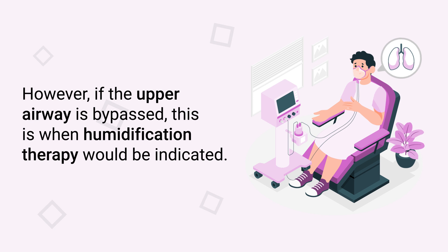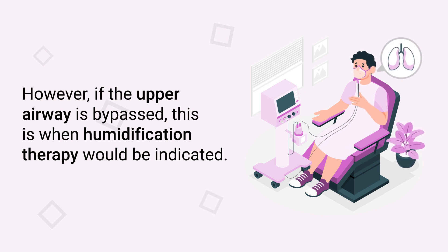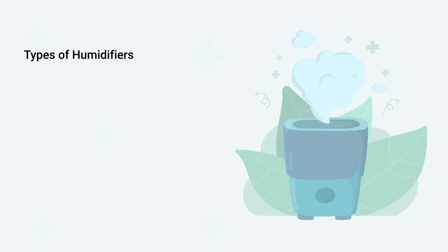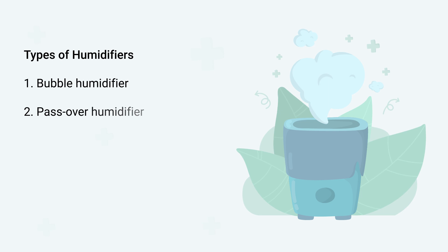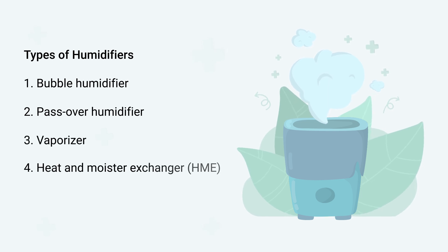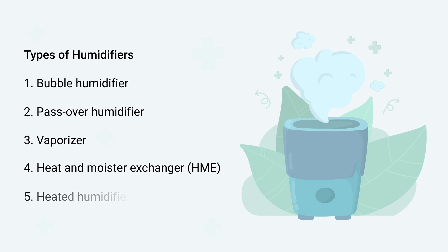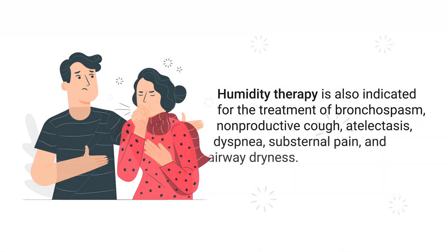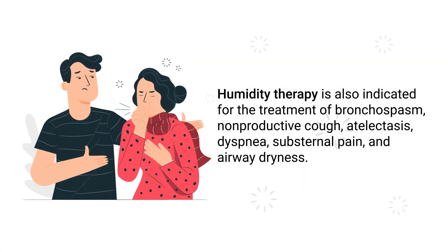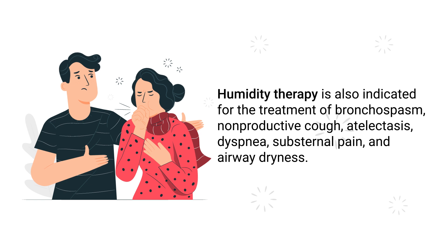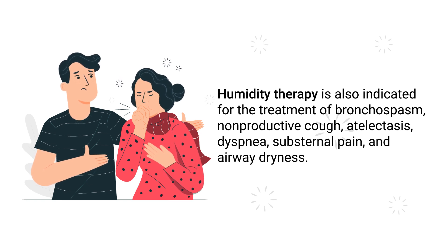However, if the upper airway is bypassed, this is when humidification therapy would be indicated. The types of humidifiers that are used include bubble humidifier, passover humidifier, vaporizer, heat and moisture exchanger, and heated humidifiers. Humidity therapy is also indicated for the treatment of bronchospasm, non-productive cough, atelectasis, dyspnea, substernal pain, and airway dryness.